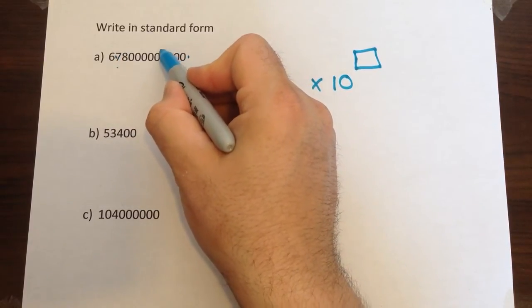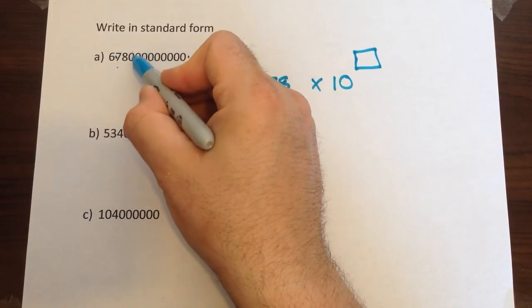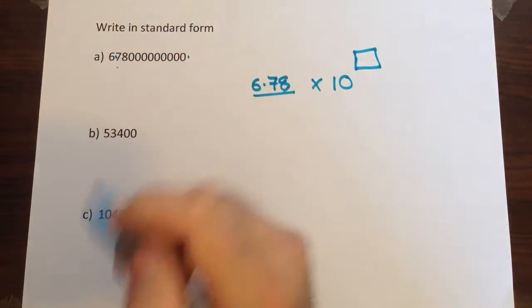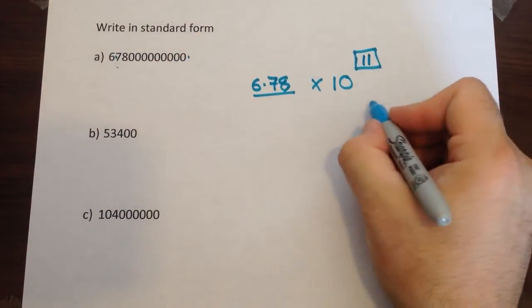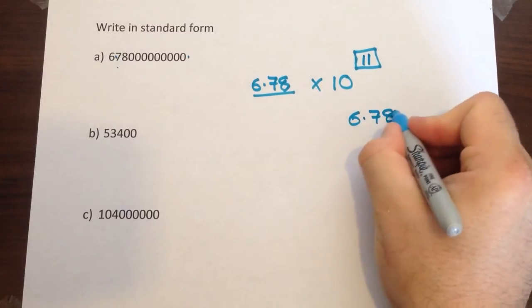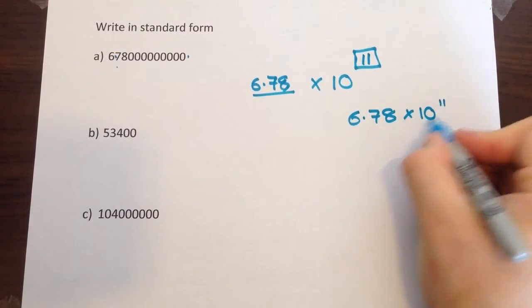So 1, 2, 3, 4, 5, 6, 7, 8, 9, 10, 11. So our answer for this one would be 6.78 times 10 to the power of 11.